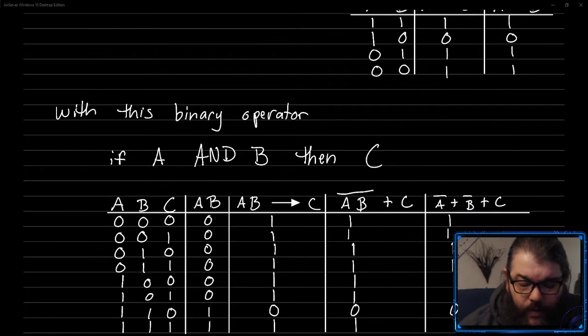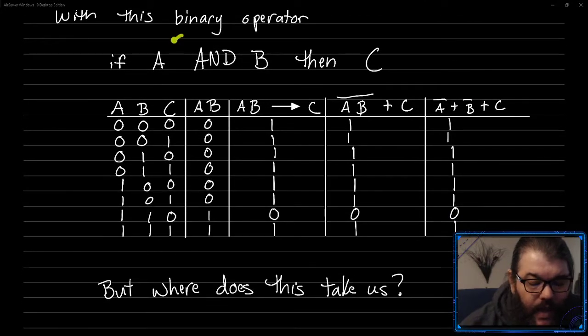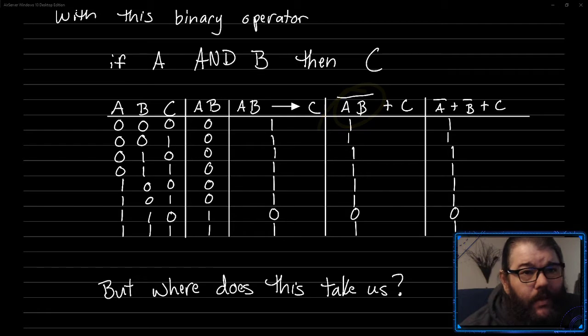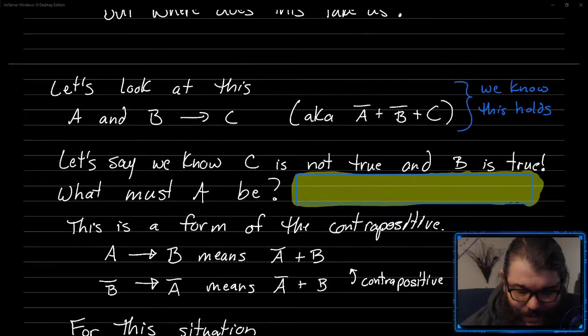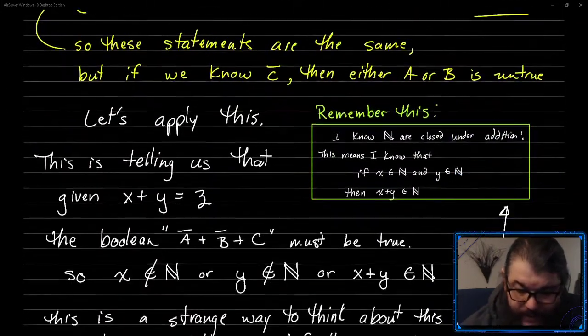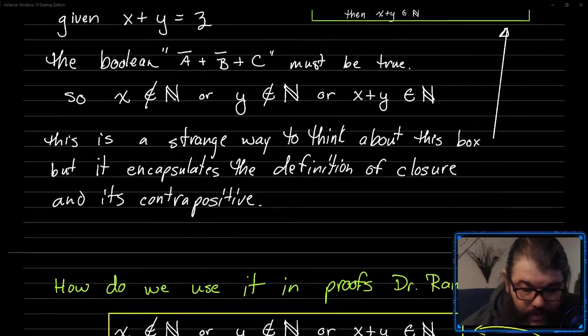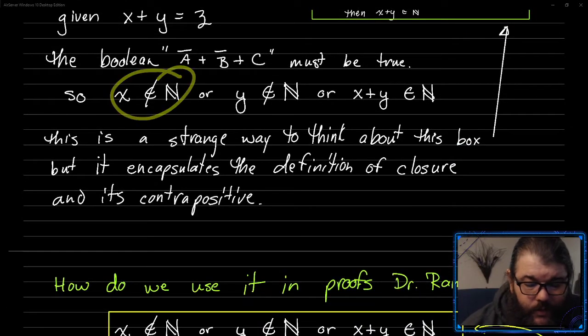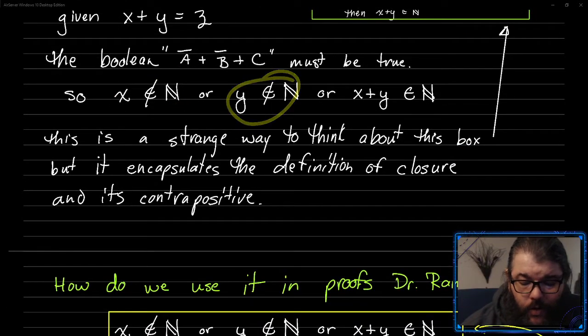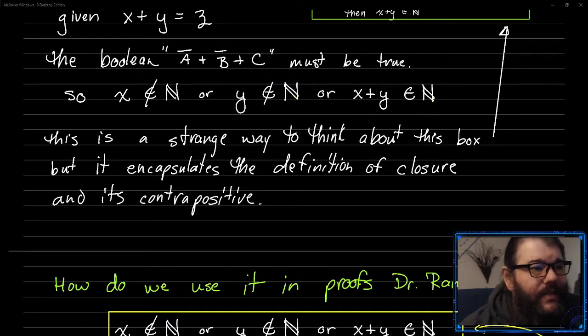And so with this particular binary operator, when you negate a and b using DeMorgan's law, when you negate a and b, you end up with not a or not b. And so this full thing takes us to the situation where you have either x is not a natural number or y is not a natural number or x plus y is a natural number.